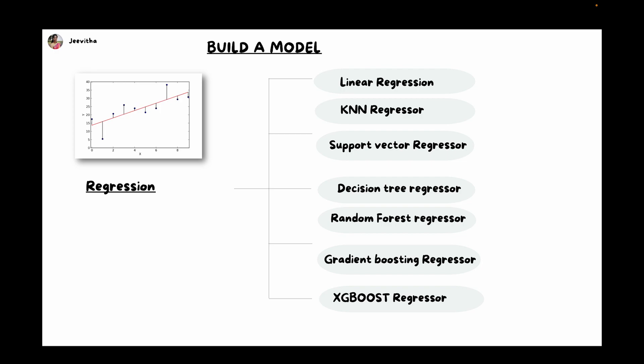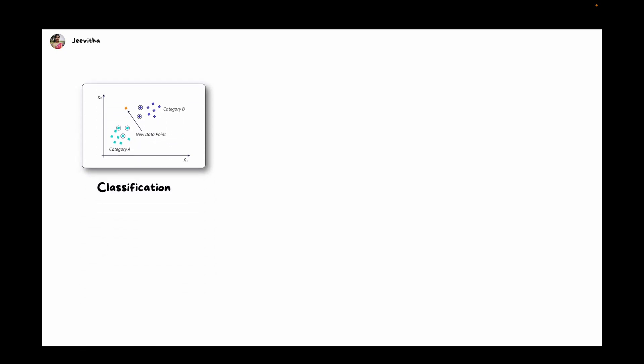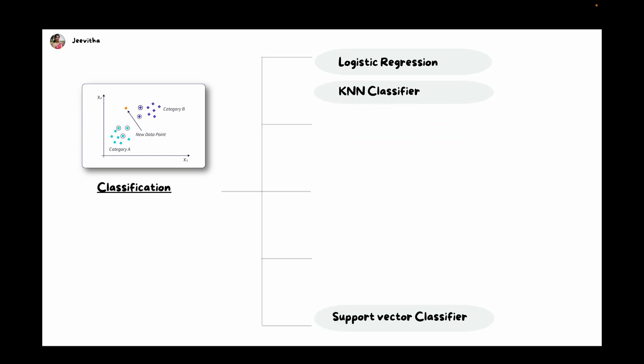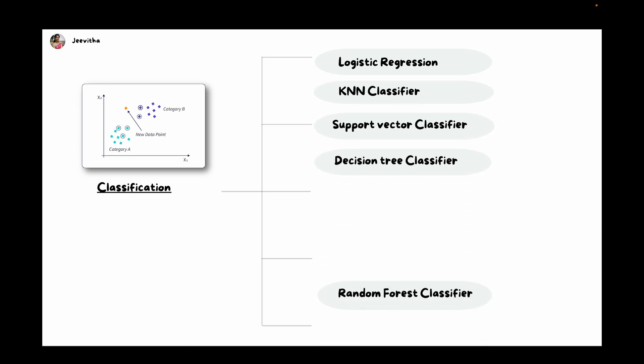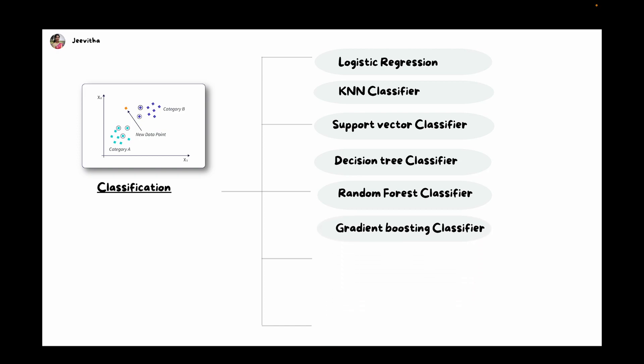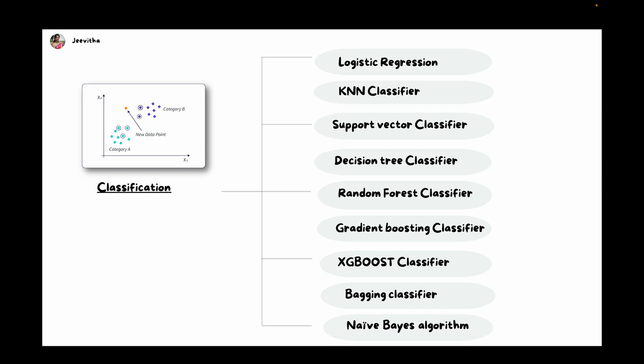If the data type of the target variable is categorical — text or discrete — then go with classification algorithms, where we classify data into different classes. Classification algorithms include logistic regression, KNN, support vector classifier, decision tree classifier, random forest classifier, gradient boosting, XGBoost, bagging, and Naive Bayes. These are the different classification algorithms to use when the target variable is categorical.